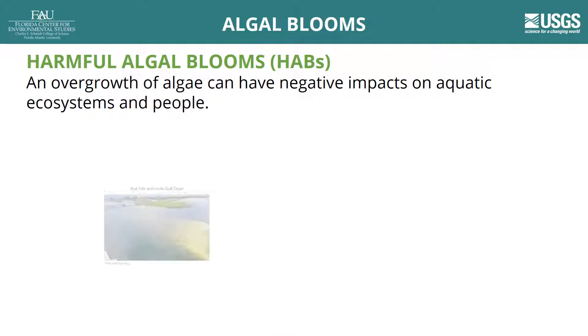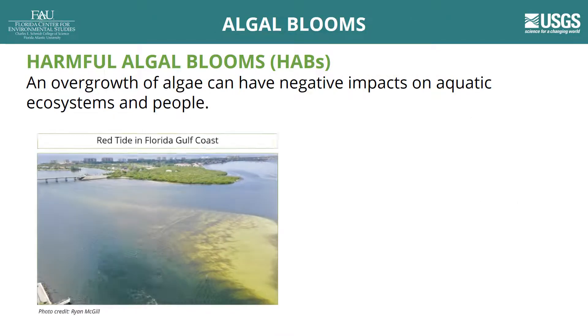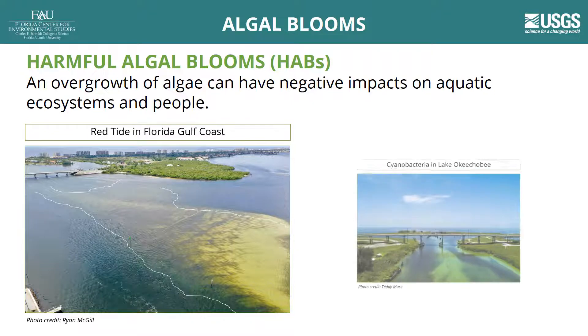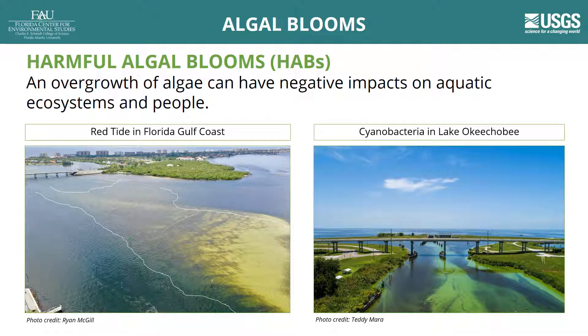Algal blooms are a rapid overgrowth of algae that occur under certain environmental conditions. Despite their importance, they can have negative impacts on ecosystems and people. Some types of algal blooms are especially harmful to people, animals, and aquatic ecosystems. These are referred to as harmful algal blooms, or HABs for short.